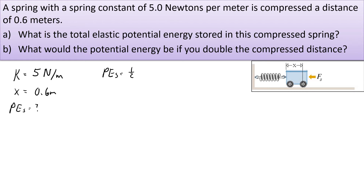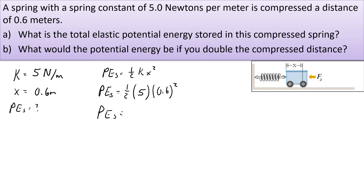We start by writing the given information: k equals 5 newtons per meter, x equals 0.6 meters, and we're looking for the potential energy stored in the spring. We write the equation: PE-sub-S equals one-half k x squared. The spring constant is 5 N/m — it takes 5 newtons to compress it one meter, so not a very stiff spring. And x is 0.6 meters. Don't forget to square it. The potential energy stored in that spring is 0.9 joules.